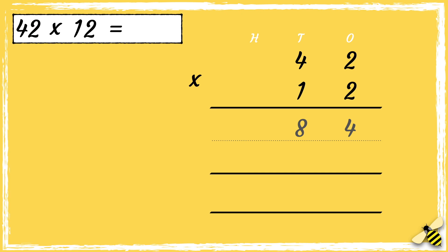Now we need to multiply one ten by two. As we're multiplying by the number ten, we need to put zero as a placeholder in the ones column. Now we've got zero as our placeholder, we can multiply one ten by two — one times two is two. Then we can work out one ten multiplied by four tens — one times four is four.